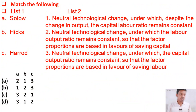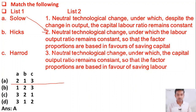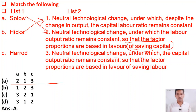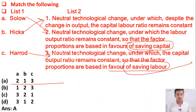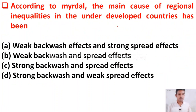The next question is match the following. The right answer is option A. Solow-neutral technological change: the labor-output ratio remains constant, so factor proportions favor capital saving. Hicks-neutral technological change: despite change in output, the capital-labor ratio remains constant. Harrod-neutral technological change: the capital-output ratio remains constant, so factor proportions favor labor saving. Key words: Solow = capital saving; Harrod = labor saving.